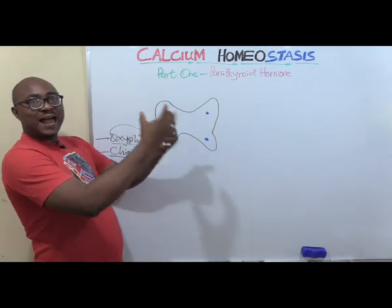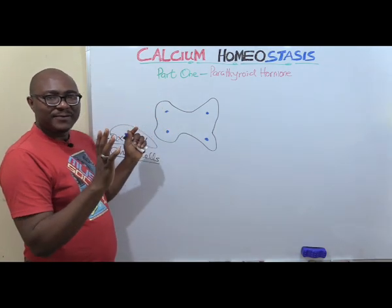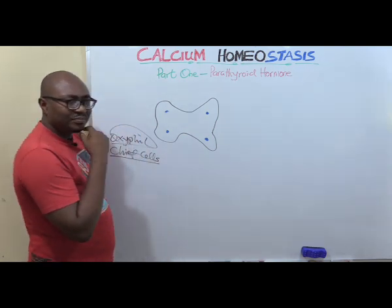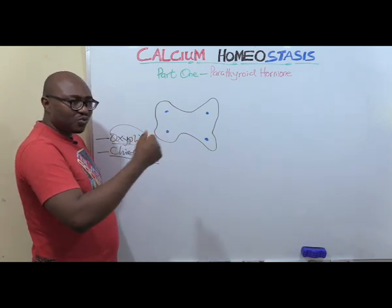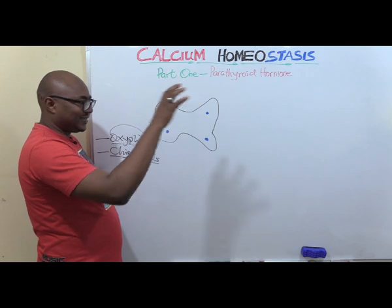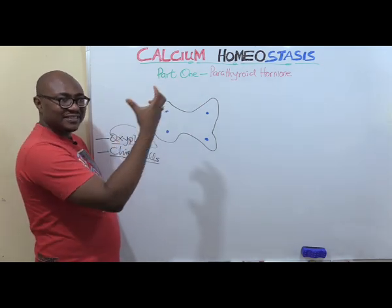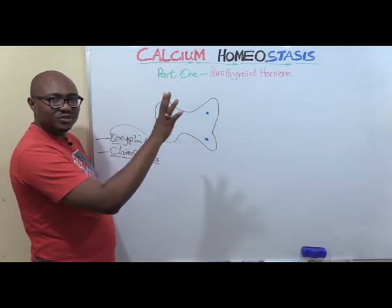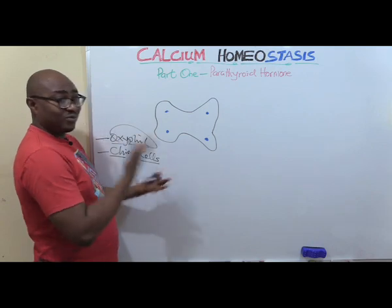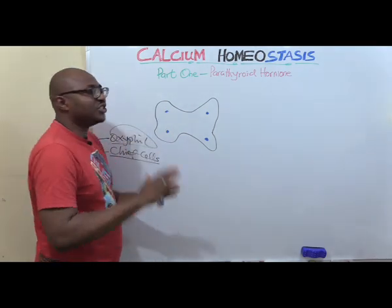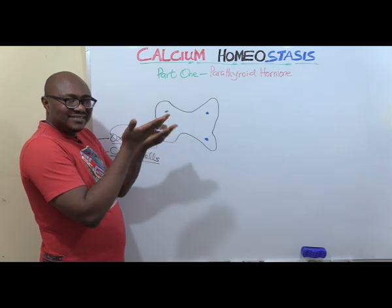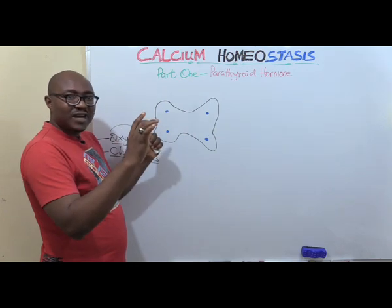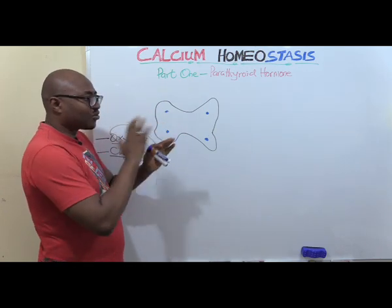Being a peptide hormone, its receptors are located at the plasma membranes. To understand how parathyroid hormone functions, you need to know what it does at those three sites — the intestine, the bone, and the kidneys. The main function of PTH is to increase the ECF level of calcium.